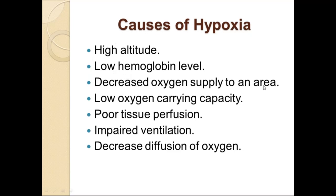Decreased oxygen supply to an area — for example, if you are in a closed room with no ventilation, you have no oxygen supply. No oxygen-carrying capacity, poor tissue perfusion, impaired ventilation, hyperventilation, and increased diffusion of oxygen problems — all can lead to hypoxia when oxygen transport is impaired.